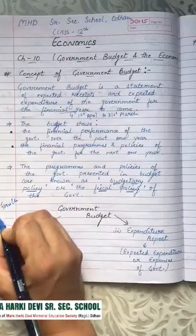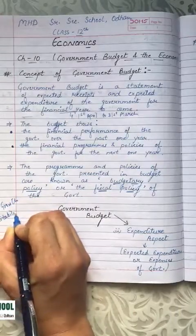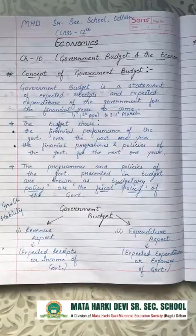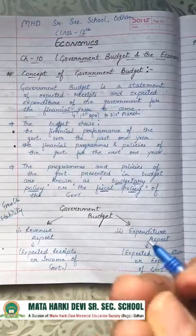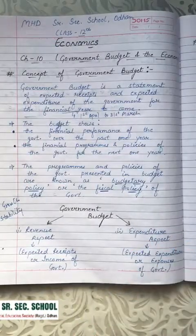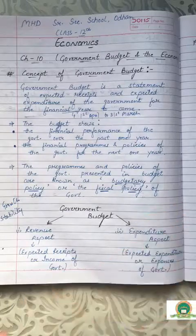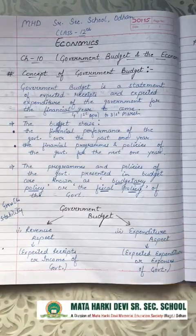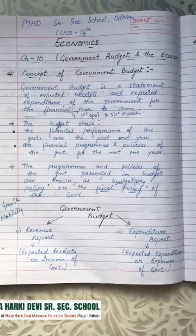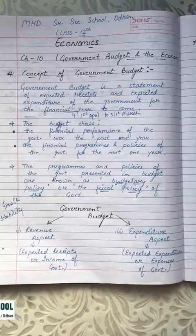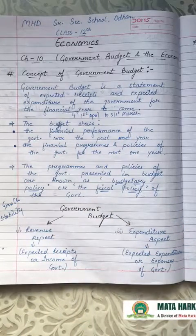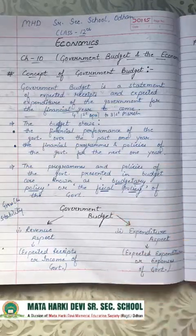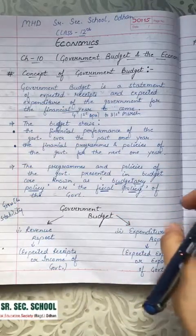The government budget has two basic objectives: one is growth and the other is stability. Growth here stands for GDP growth — increasing the country's production. Stability means ensuring that trade cycles like recession and depression don't occur, and that inflation and deflation are kept under control so the country runs in a stable and smooth way. Government budget is also called the Union Budget.